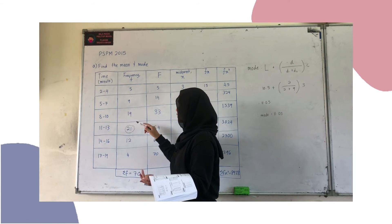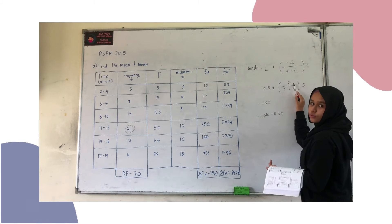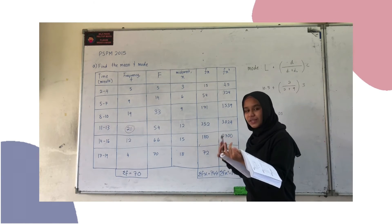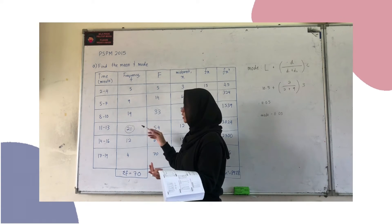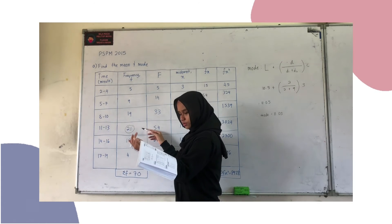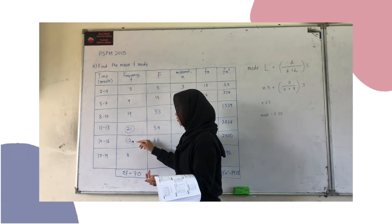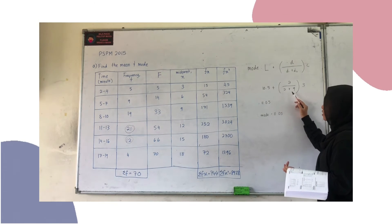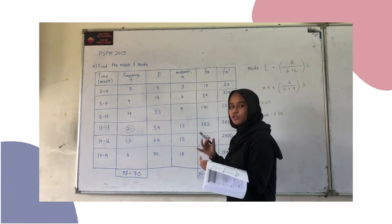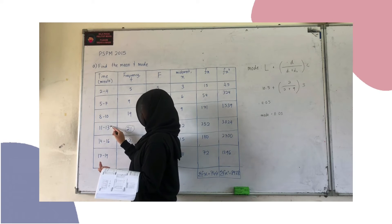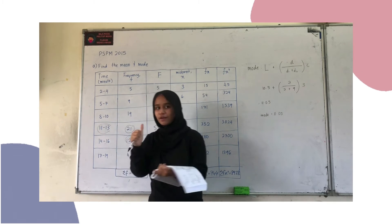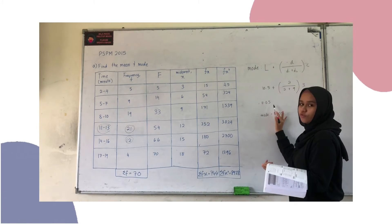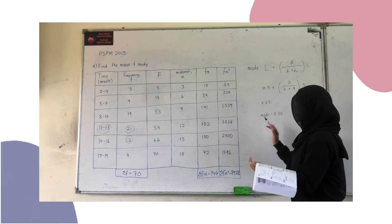D2 is the difference between the frequency of the mode class and the frequency of the class after the mode class. So D2 equals 21 minus 12, which is 9. C is the class width — looking at the intervals 11, 12, 13 — the class width is 3. Substituting: 10.5 plus 2 over (2 plus 9), multiplied by 3, we get the mode equals 11.05.